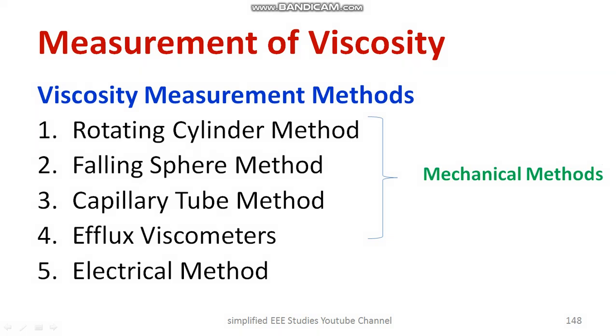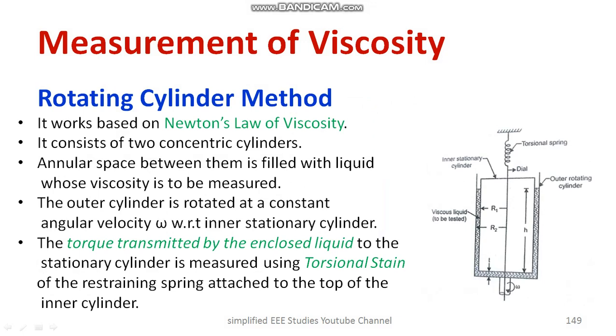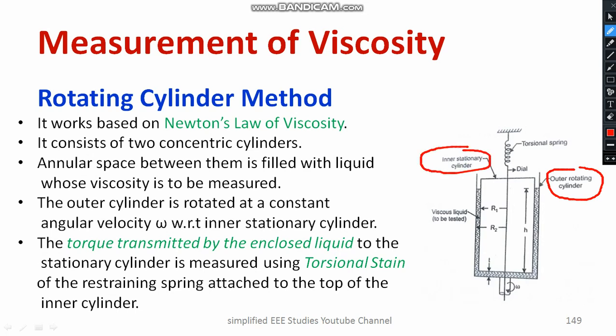First, let us understand what we mean by the rotating cylinder method. Consider the diagram — we can observe two cylinders. This is the outer rotating cylinder, and we have the inner stationary cylinder. The outer cylinder is movable, while the inner cylinder is kept stationary. In between the inner and outer cylinders, you will be keeping a viscous fluid whose viscosity has to be tested. Both cylinders are in a concentric arrangement.